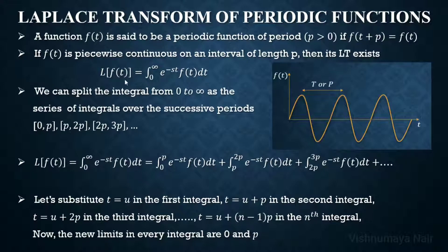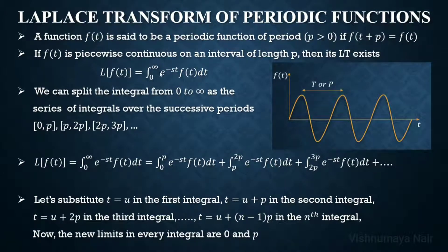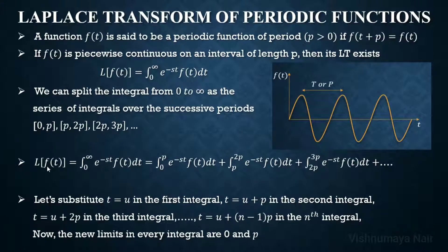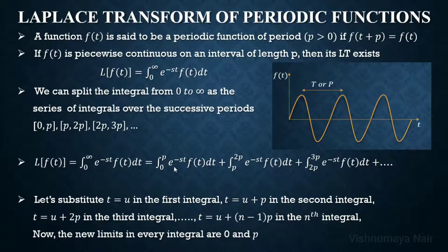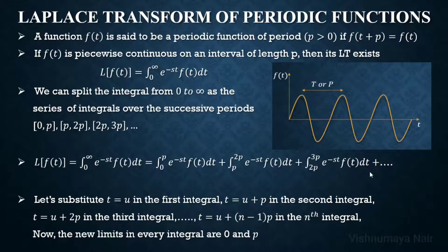The Laplace transform of a function is given by the integral from 0 to infinity of e raised to minus st times f of t dt. What we can do is split this integral from 0 to infinity as a series of integrals over successive periods: 0 to p, p to 2p, 2p to 3p, 3p to 4p, and so on.